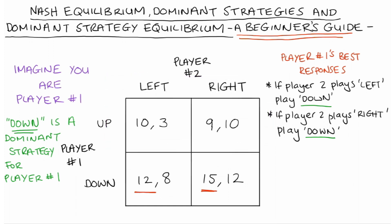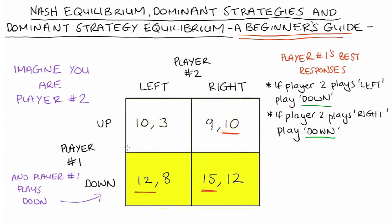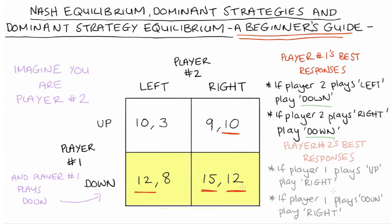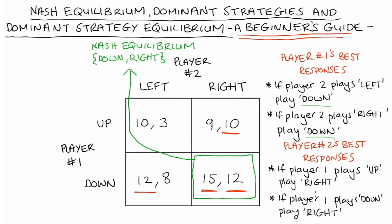Let's check player two's best responses. Imagine we're player two and player one plays up — we're on the first row. Player two could go left and get three or right and get ten. Ten is greater than three, so player two's best response is to go right if player one plays up. If player one plays down, player two could go left and get eight or right and get twelve. Twelve is greater than eight, so right is the best response for player two to player one playing down. We have one Nash equilibrium at down, right, and it looks like right is also a dominant strategy for player two — regardless of what player one does, right gives a better outcome than left.